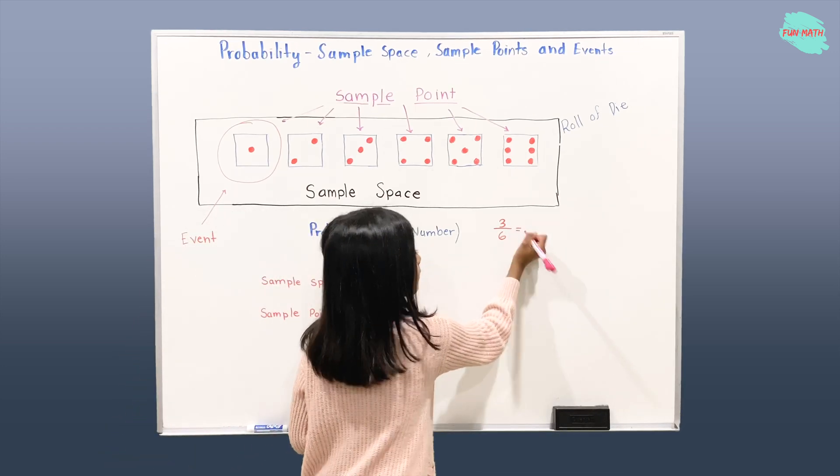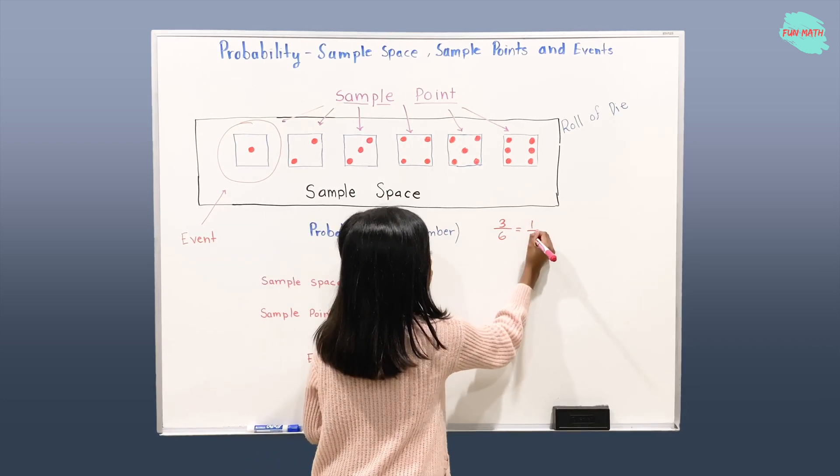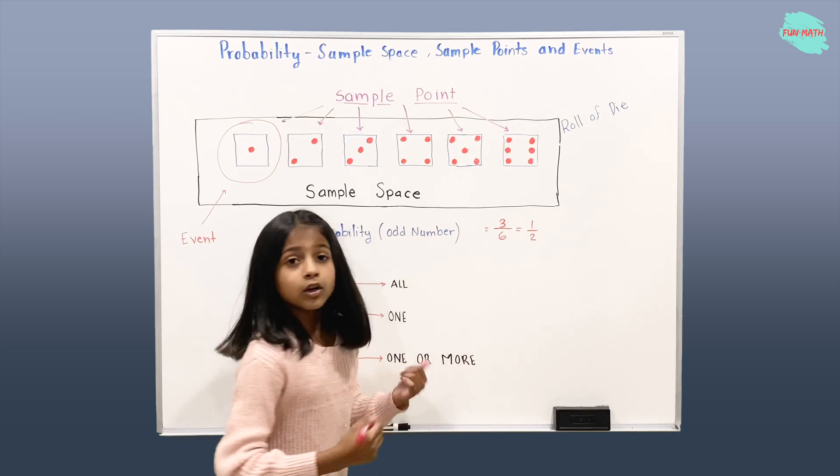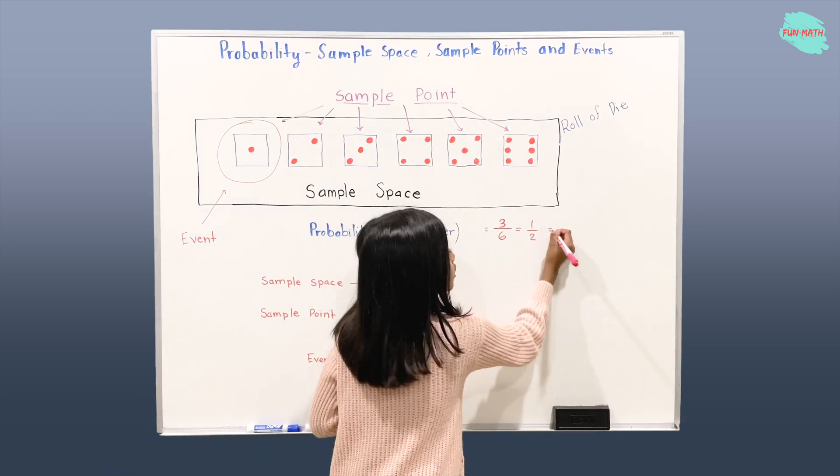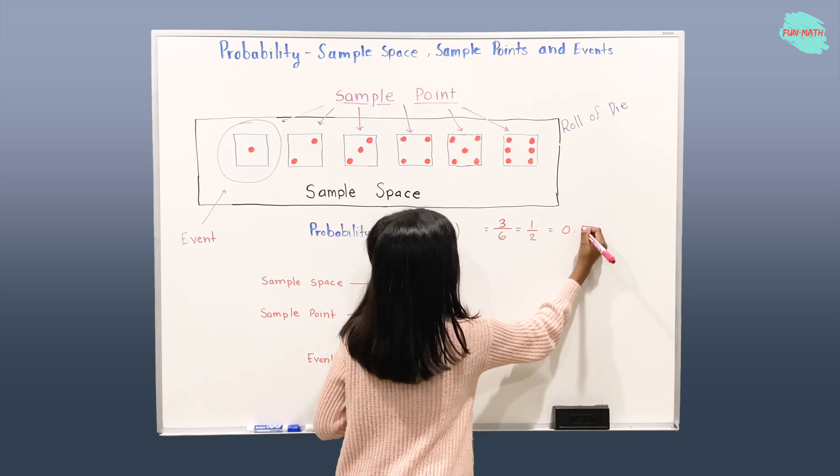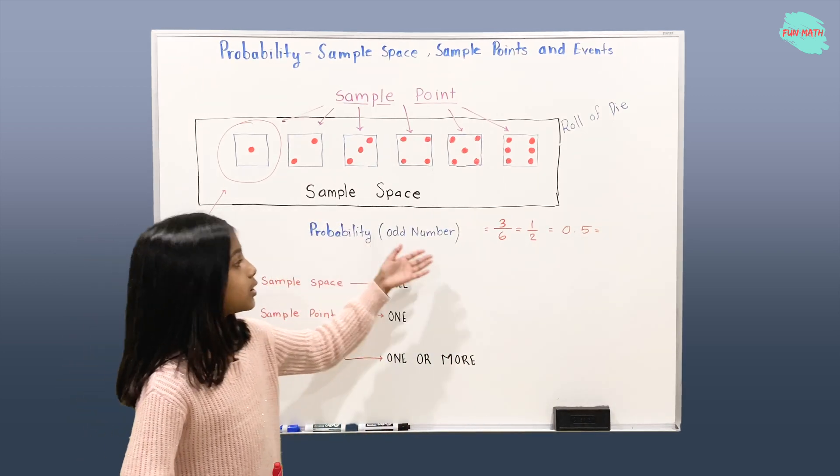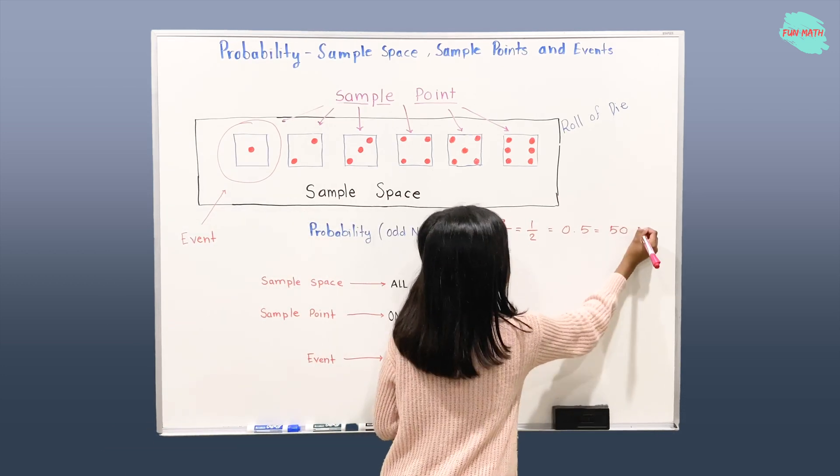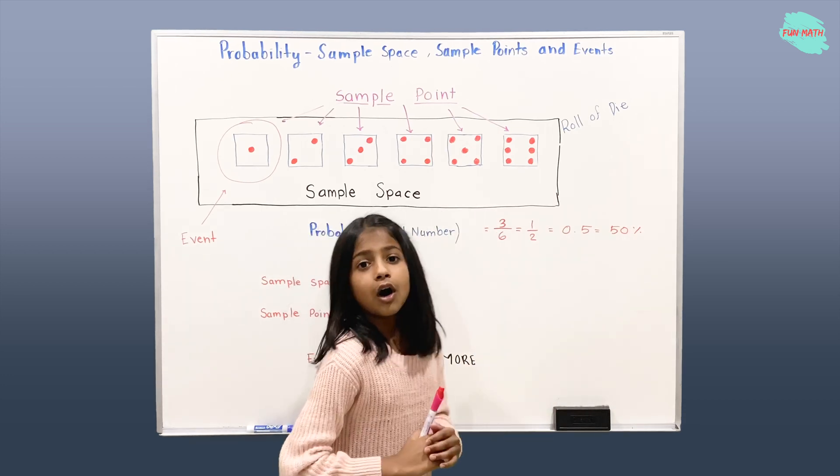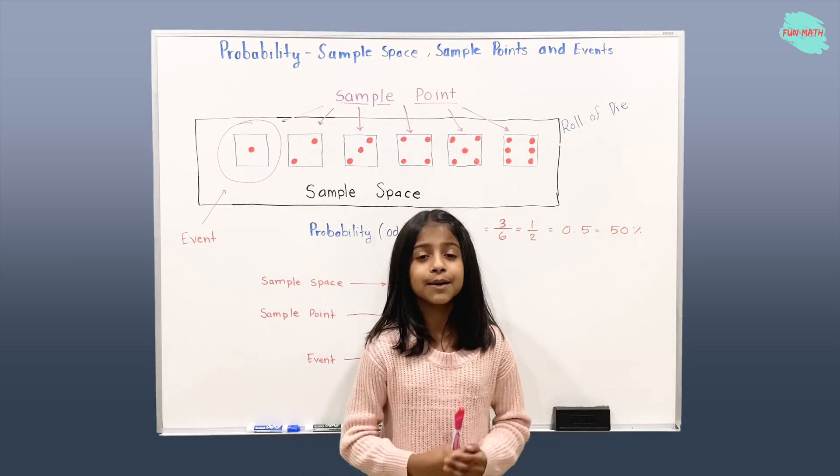3 over 6 can be 1 over 2. And 1 over 2 can be called in decimals 0.5. And the probability of getting an odd number can also be called as 50%. I hope you learned something from this video. Thanks for watching. Bye!